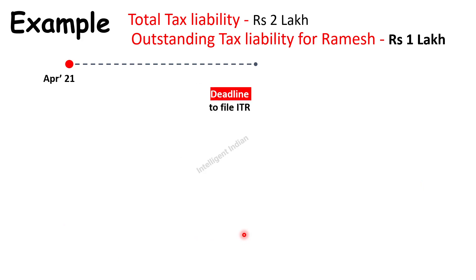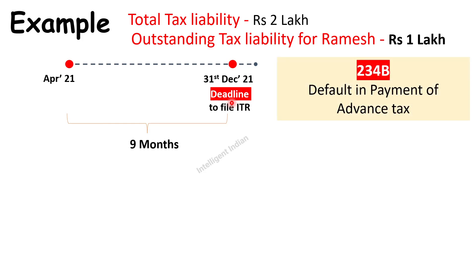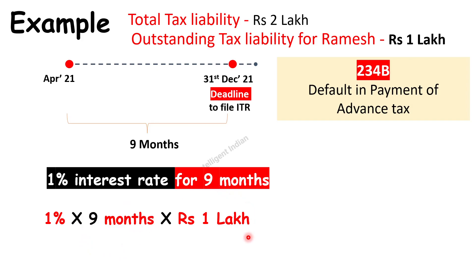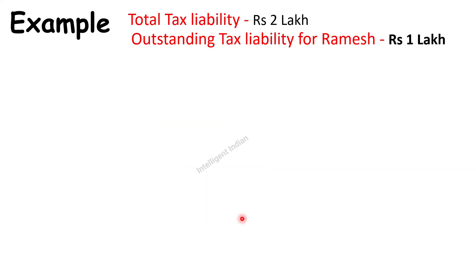Now, Section 234B. The time window for interest under 234B is from the end of the financial year to the deadline to file ITR — this window is 9 months. The same 1% interest rate applies, so the calculation is: 1% × 9 months × Rs 1 lakh outstanding = Rs 9,000 under Section 234B.